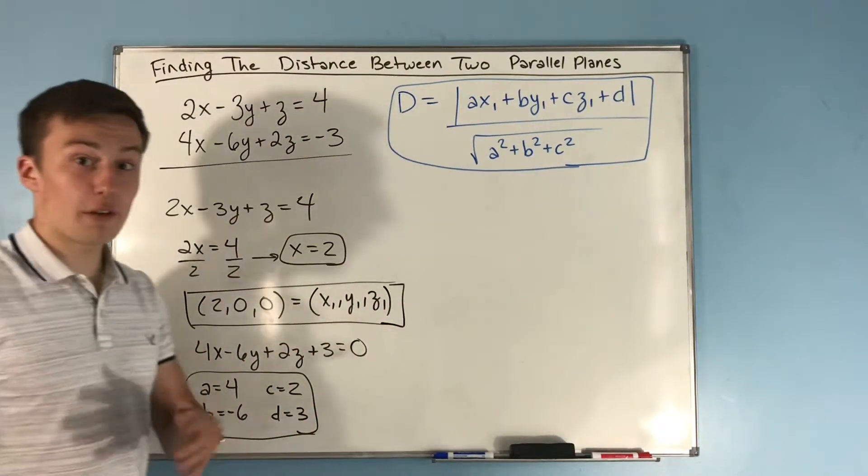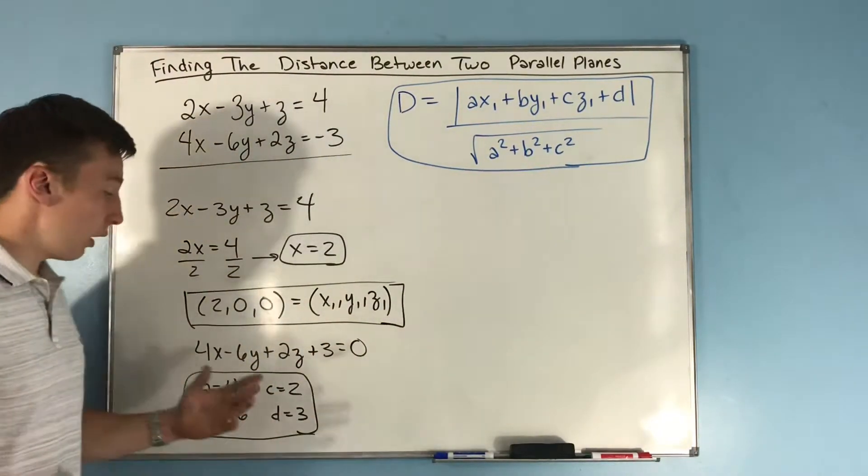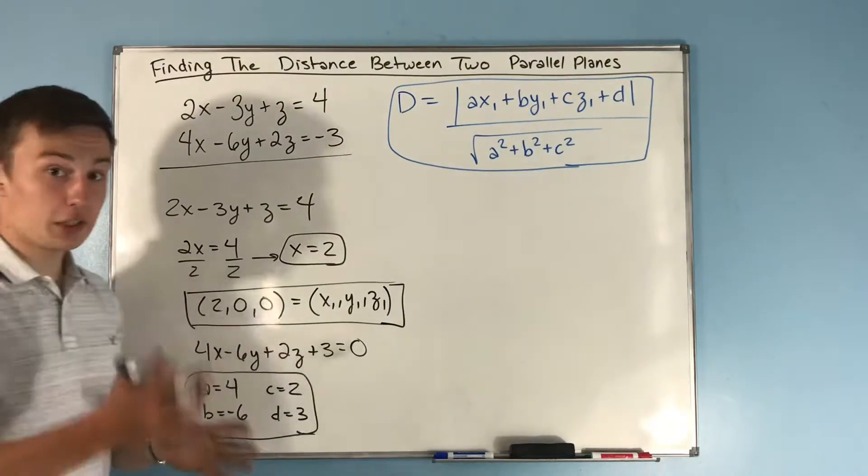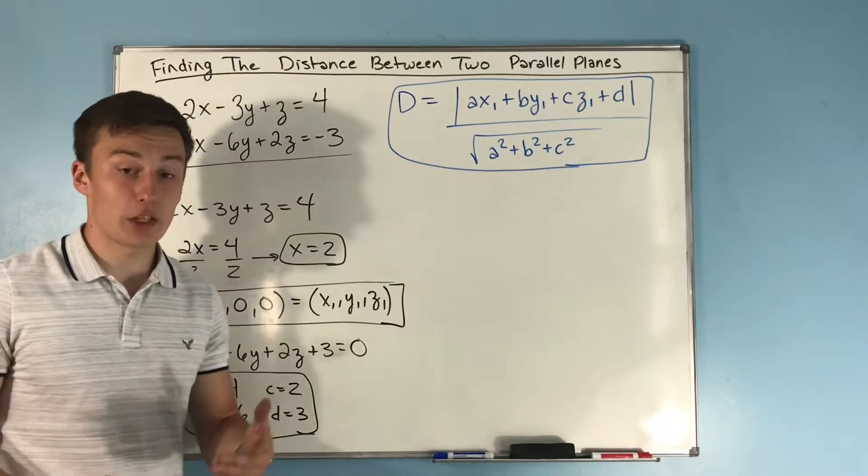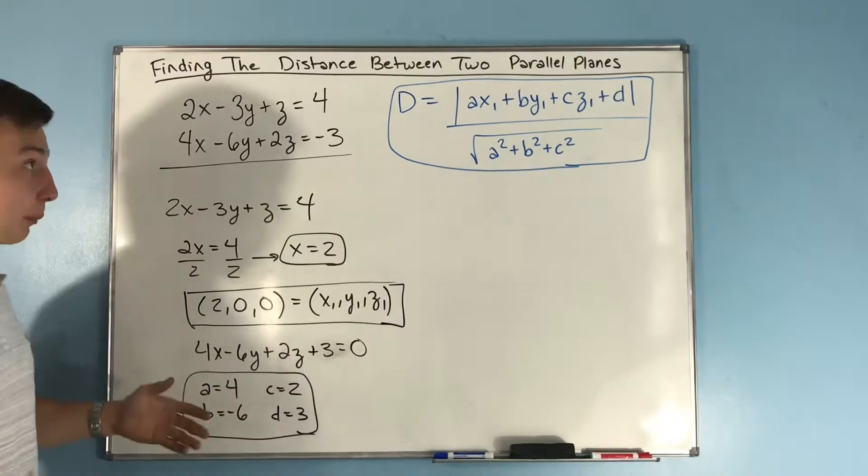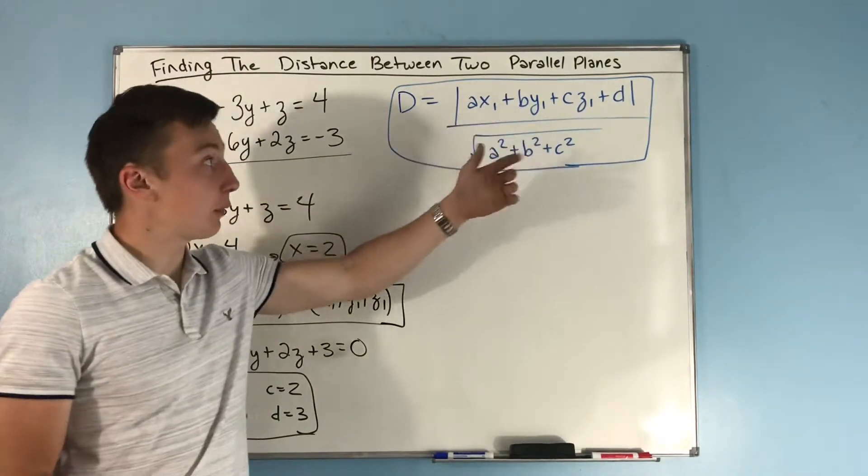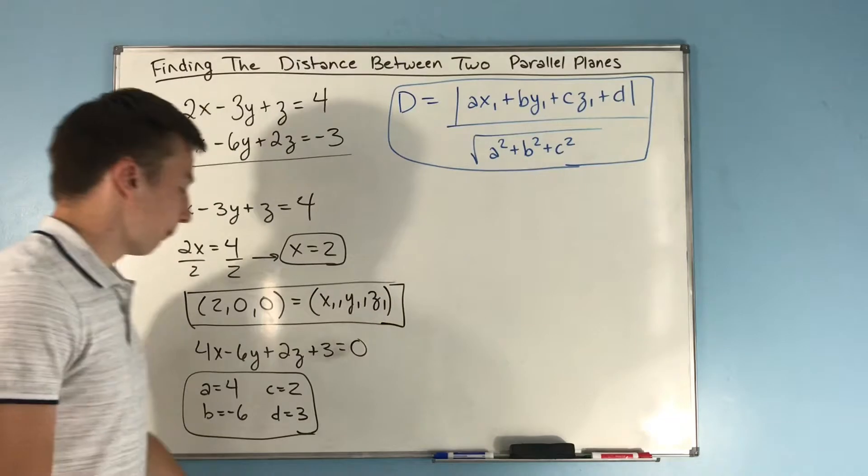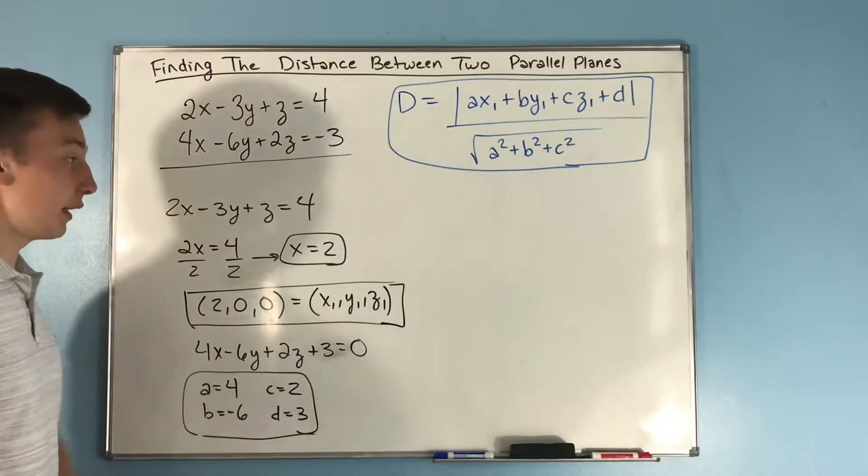If you're confused on that, go back to my video on the different types of equations for planes. You see right there, it's ax + by + cz + d. So there you have a, b, c, and d.